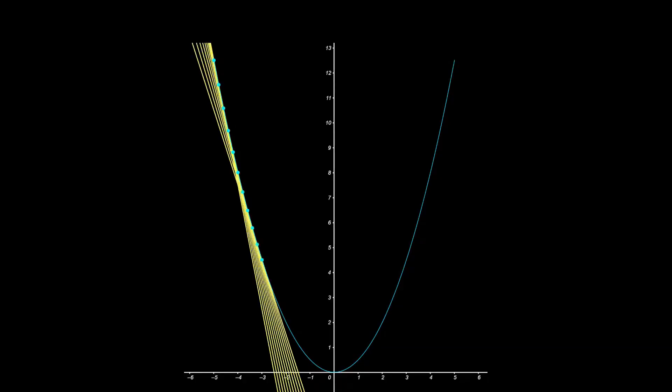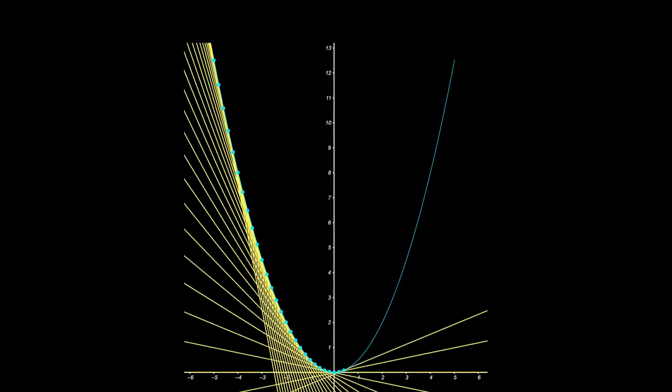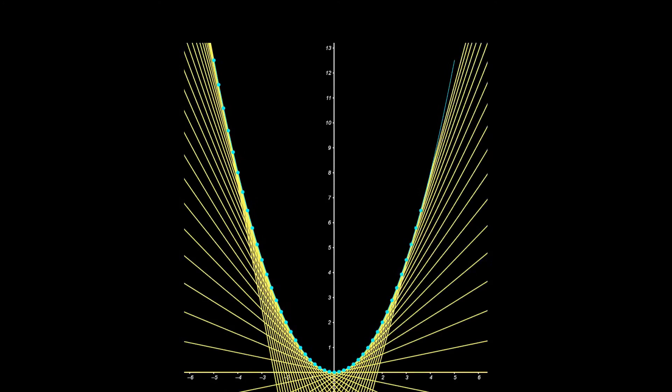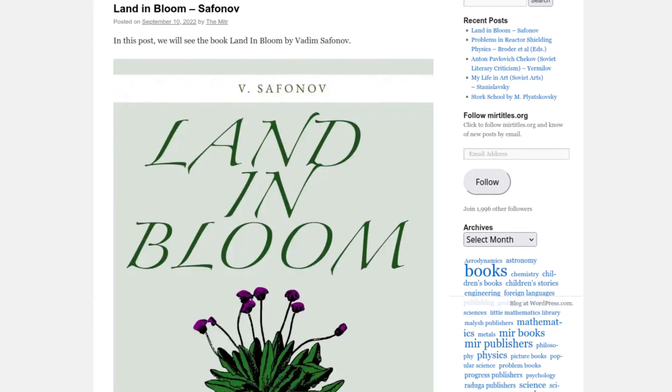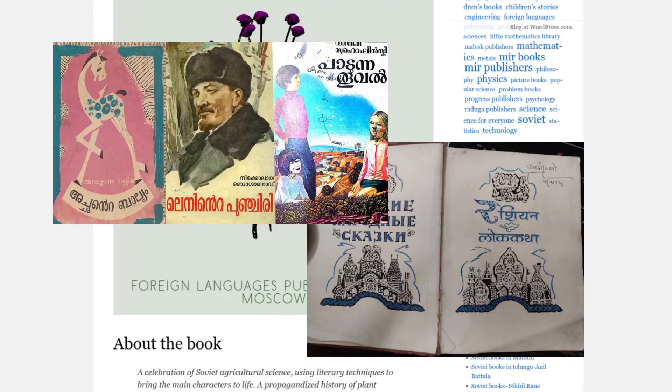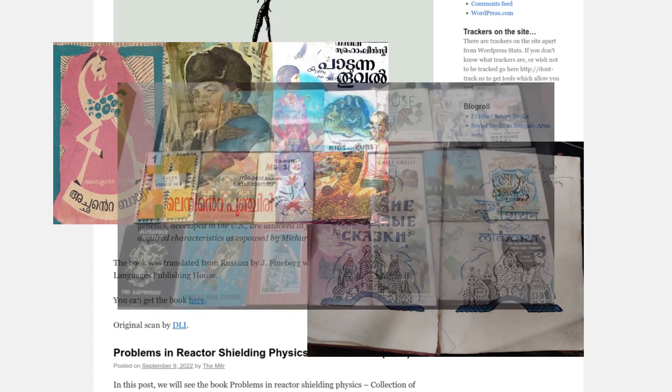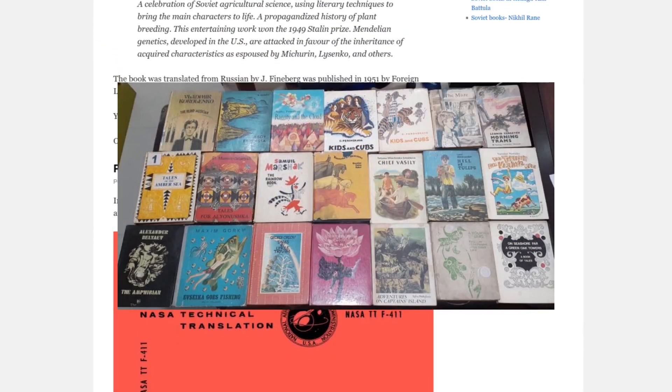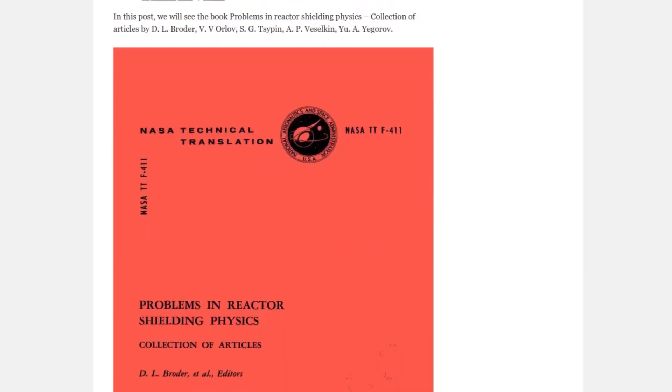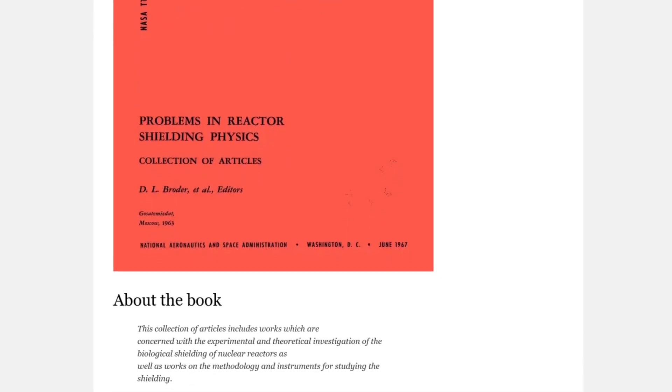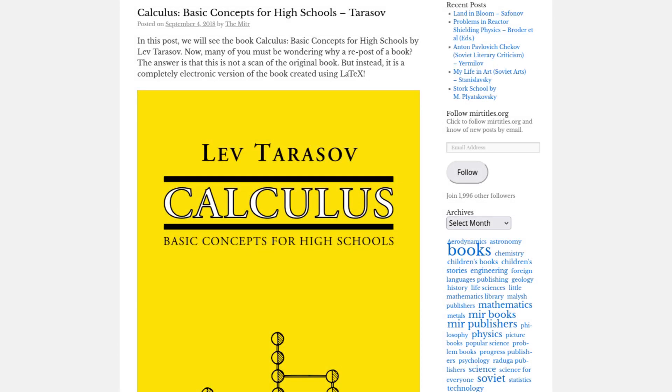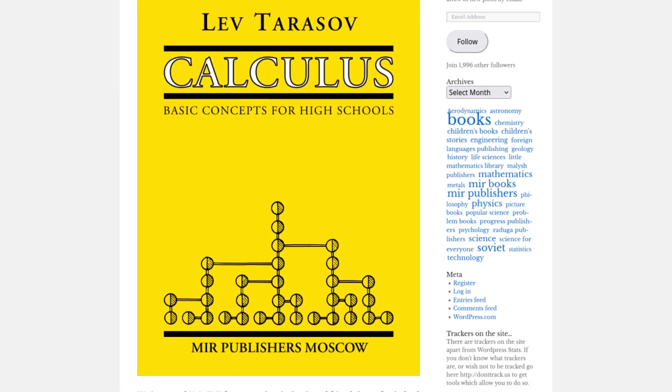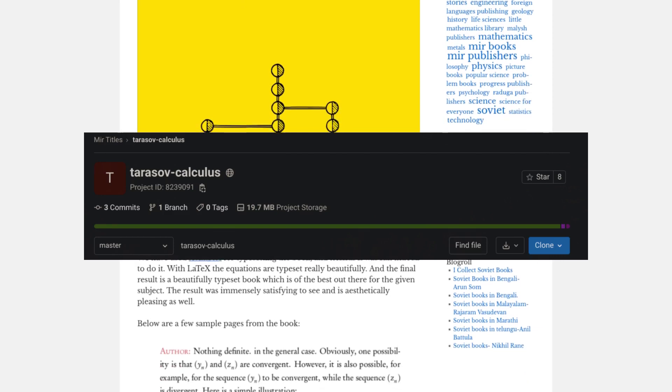I am going on a tangent here to mention how the search for this calculus book led to the discovery of the site MIR titles. So, from what I understand, at one point of time, Soviet books were quite popular in India. But now, many of these books are out of publication and hence quite hard to find. The people behind this site collect these books, scan them, and then make them publicly available. For some books, like this calculus book, they have also started projects on GitLab to typeset them in LaTeX.